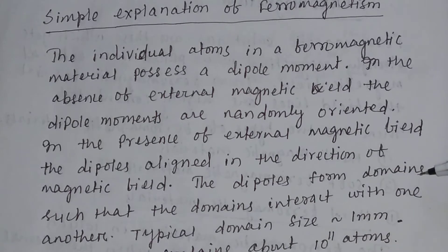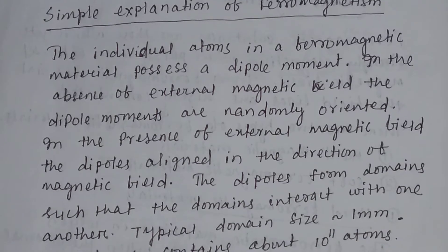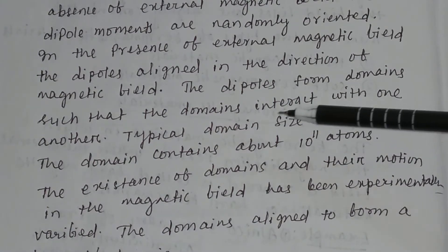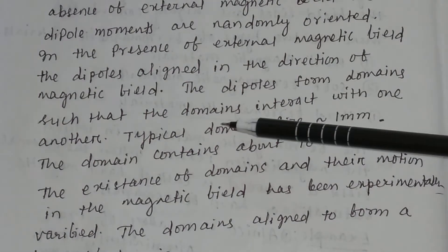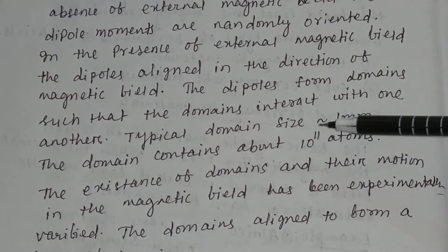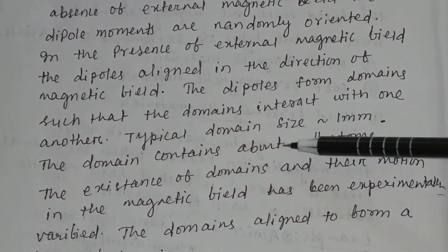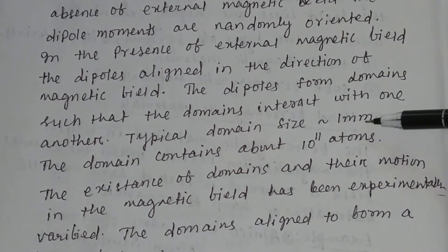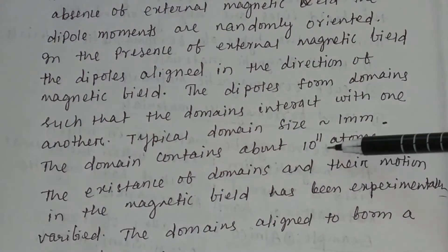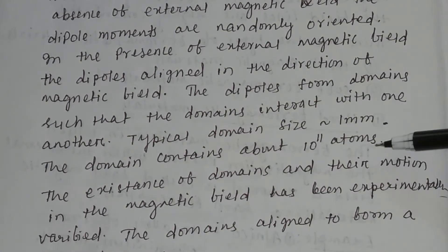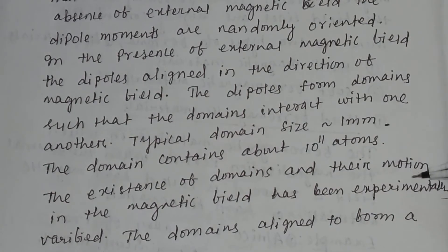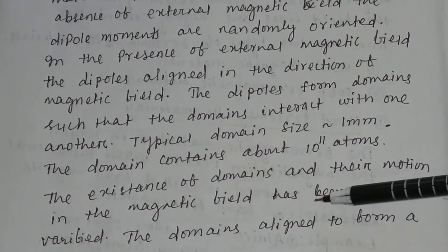The dipoles form domains, and the domains interact with one another. The typical size of a domain is of the order of 1 mm. The domain contains about 10 to the power 11 atoms. The existence of domains and their motion in the magnetic field has been experimentally verified.